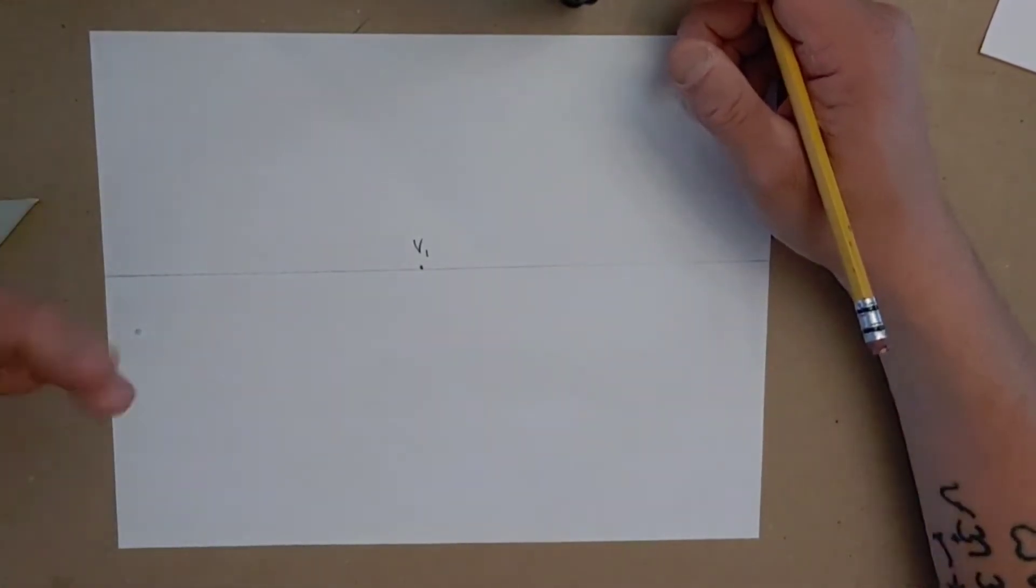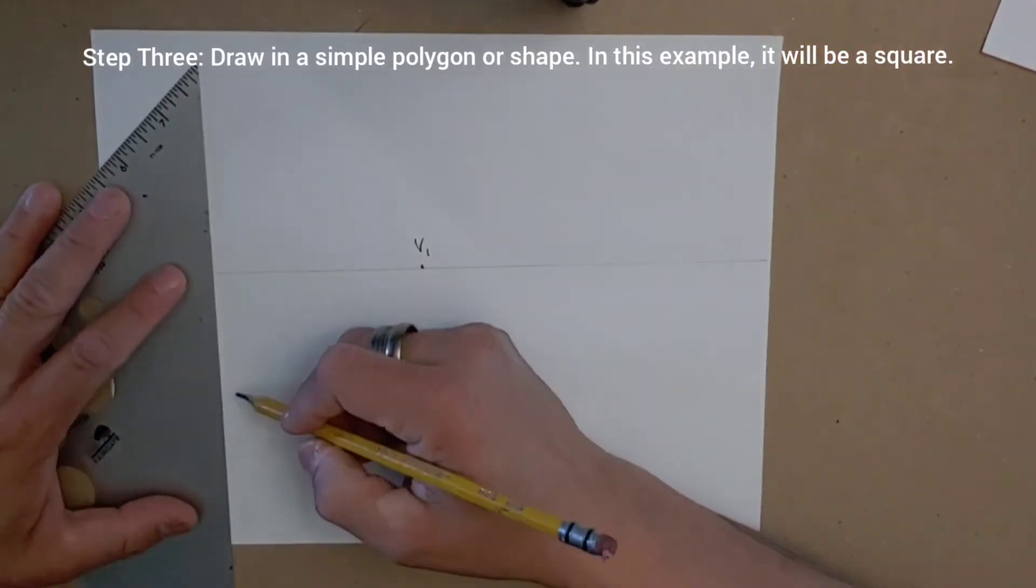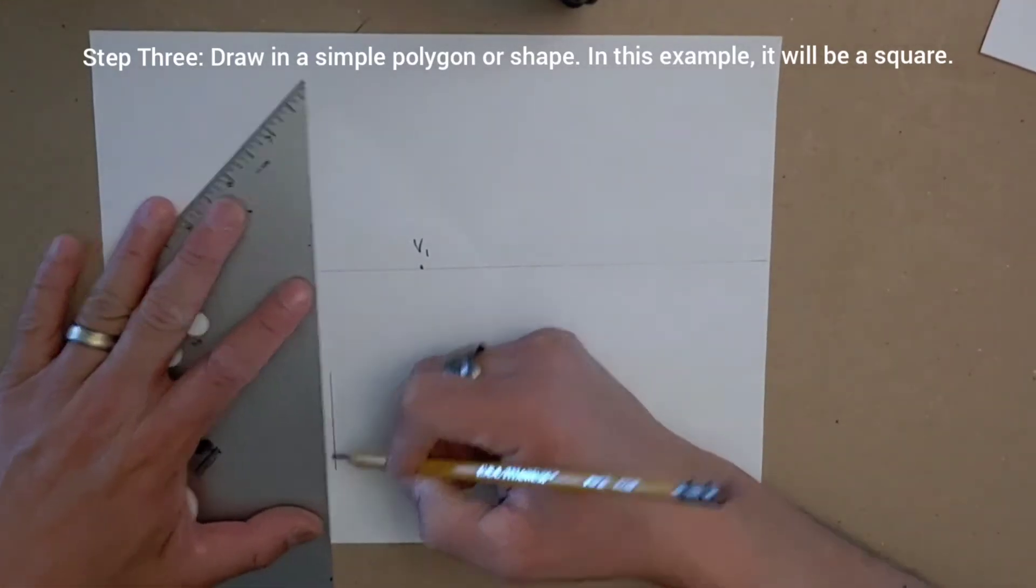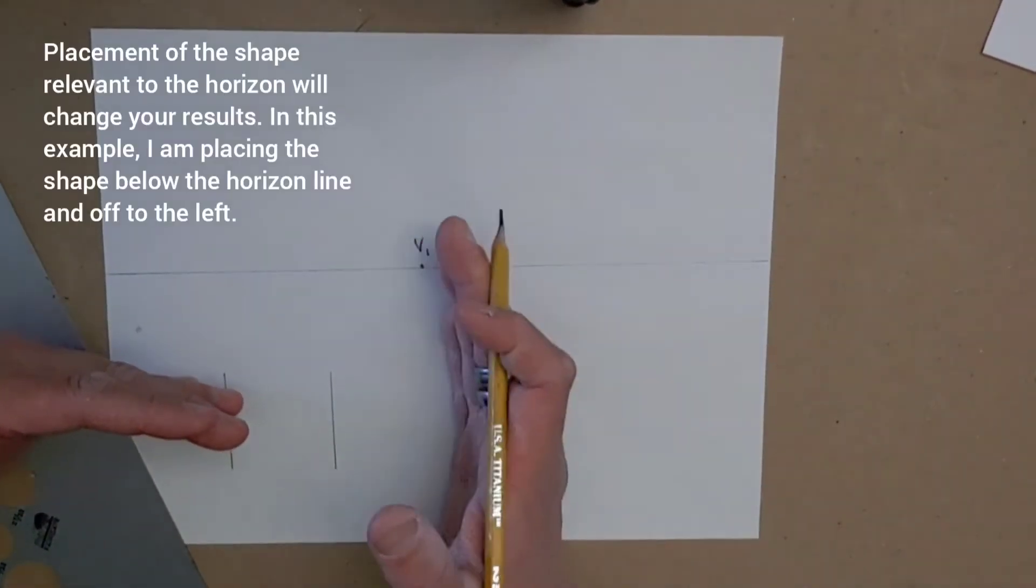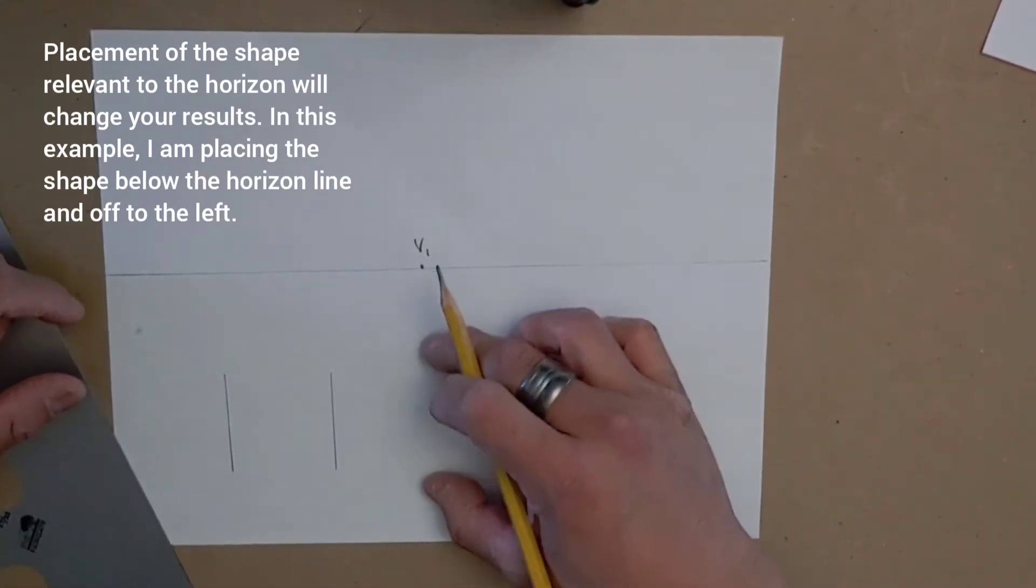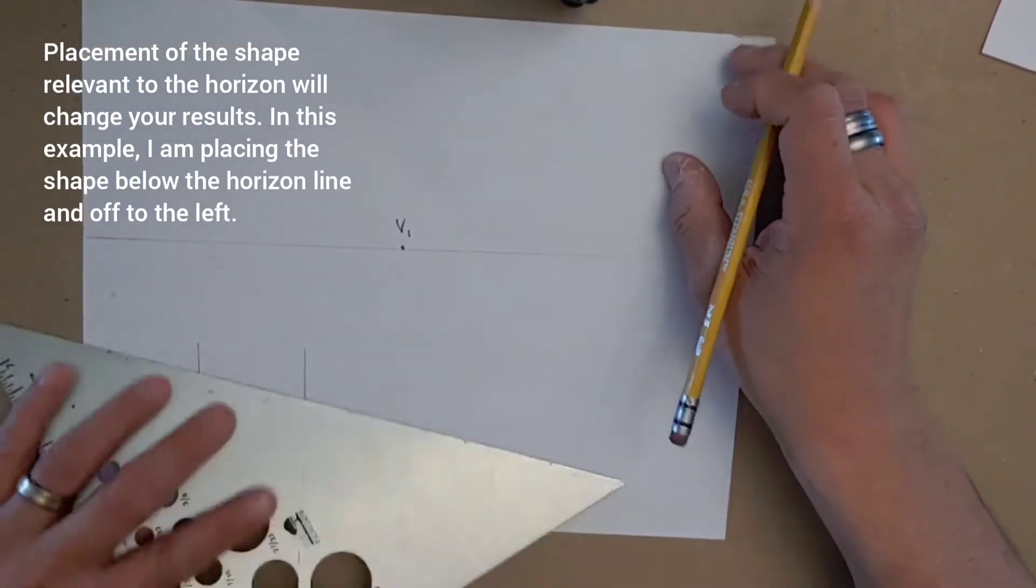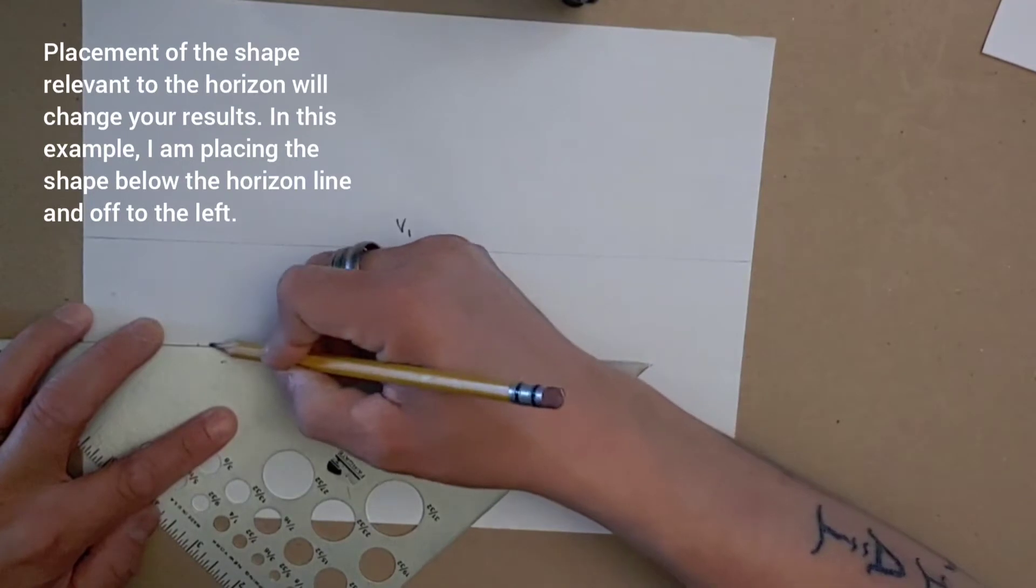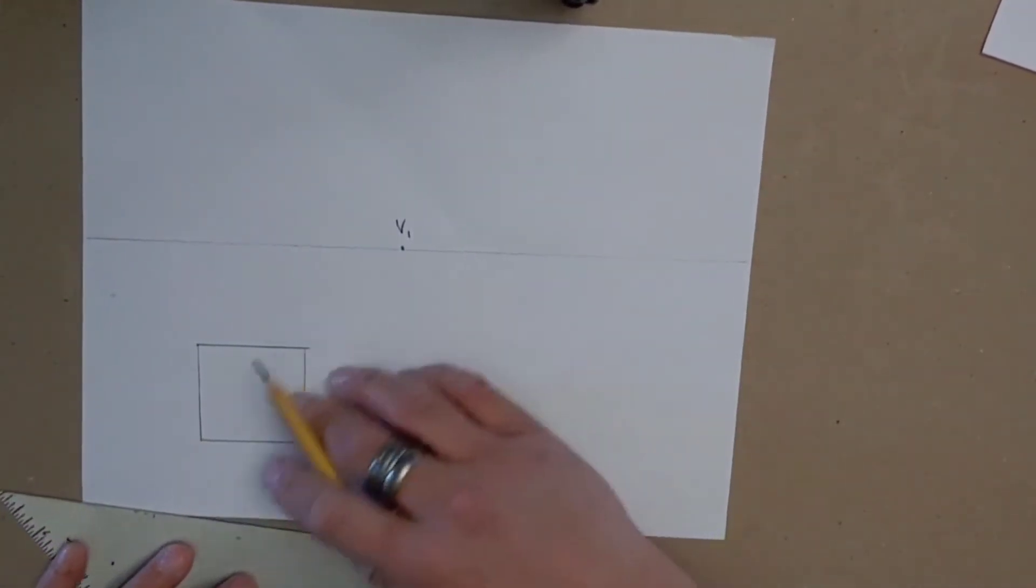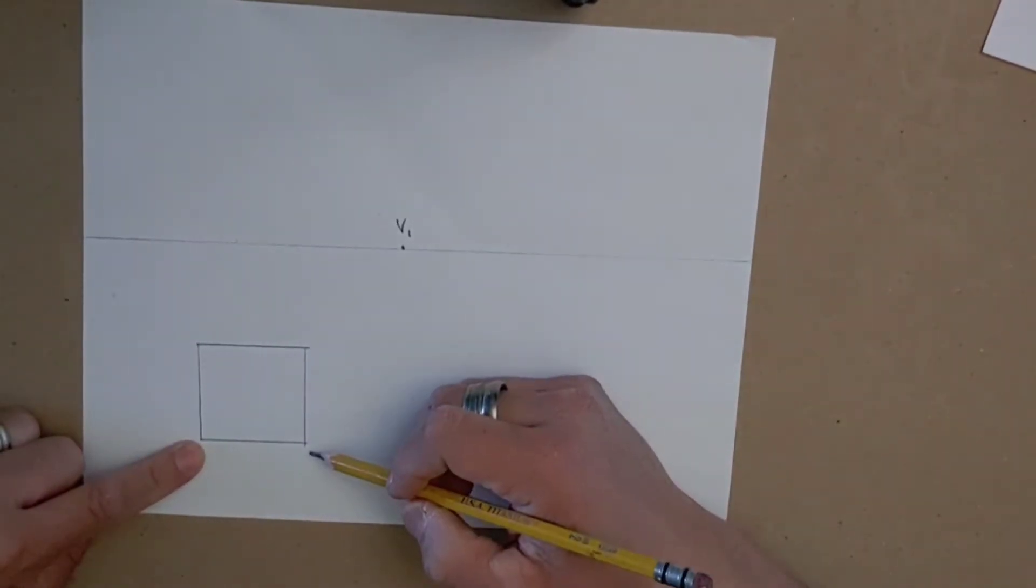So once we have this set up, we can start now drawing a particular shape. In this case, it's going to be a square or a rectangle. I'm going to put it here below the horizon line. The size of it is kind of relevant, but what I'm doing is I'm putting it below the horizon line, and not at all below V1. So I'm not going to have it directly below V1. I'll move it off to the side, and I'll draw this shape using my straight edge. The straight edge is absolutely helpful to have. So I have my horizon line, my vanishing point, and my simple shape.